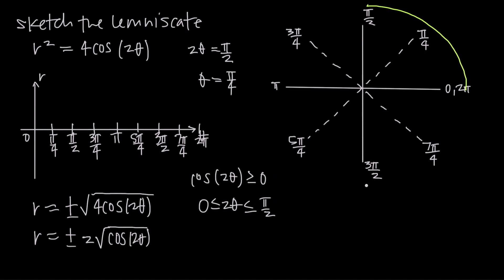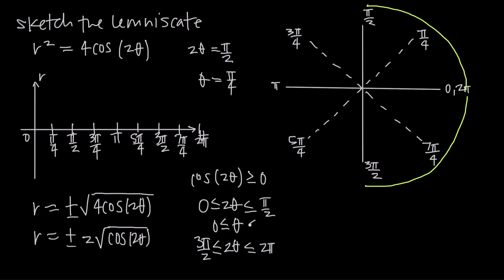So we need 2 theta between 0 and pi over 2, or 2 theta between 3 pi over 2 and 2 pi. Dividing through by 2, we get theta between 0 and pi over 4, or theta between 3 pi over 4 and pi. These are the valid intervals where we'll evaluate the function.